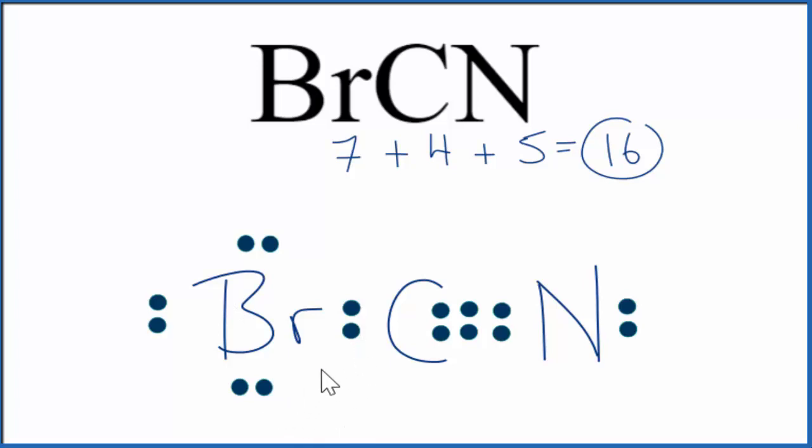If you want to know the molecular geometry for this molecule here, BrCN, it would be linear because of the triple bond here.